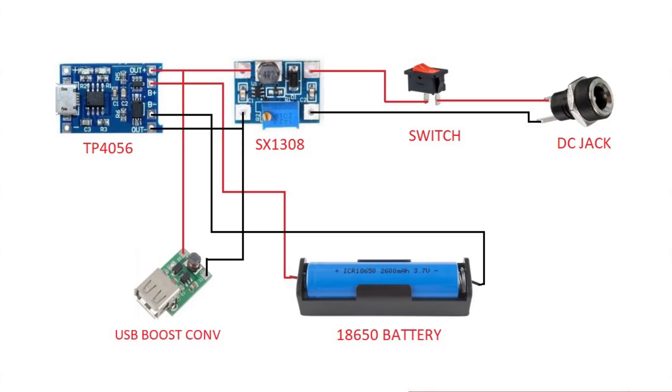The first boost converter is SX1308 module. The output voltage can be set by trimming the trim pot. The output of the boost converter SX1308 is connected to a DC jack through a SPST switch.